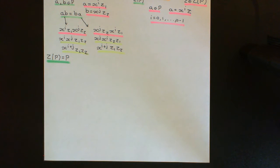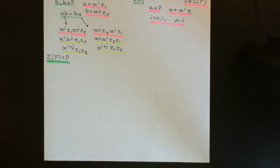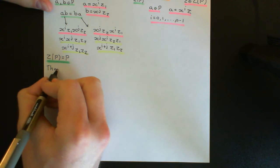Welcome back to this next video in which we are discussing groups of order p-squared. What we want to do is prove the main theorem of this video: that if you have a group of order p-squared, it's either isomorphic to the cyclic group on the set of p-squared elements, or it's isomorphic to the cyclic group on the set of p-elements direct-producted with the cyclic group on the set of p-elements. We'll call this the final theorem.